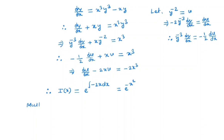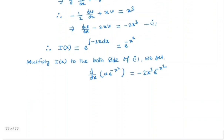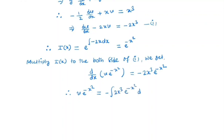In the next step, we multiply I(x) to both sides of the equation. Then we get d/dx of [v · e^(minus x²)] equals minus 2x³ · e^(minus x²).